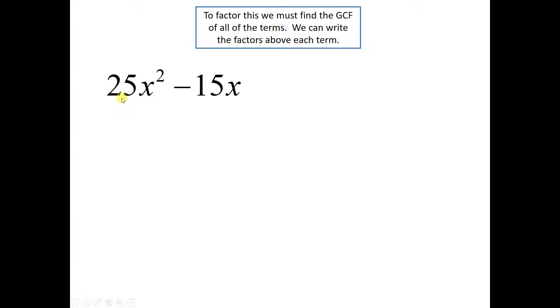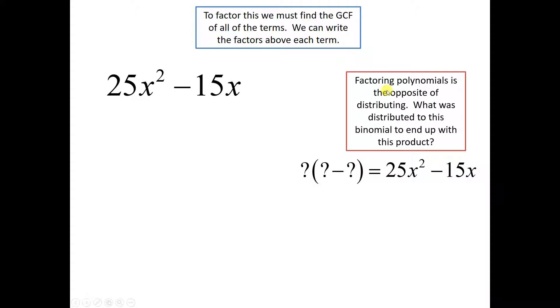To factor this, we have to find the greatest common factor between 25x² and 15x. See, when we're factoring, we are doing the opposite of distributing. We have to figure out what number would be multiplied by the binomial inside the parentheses, and after you get done distributing, you would get this as your answer. The other thing is, we have to find the greatest common factor.